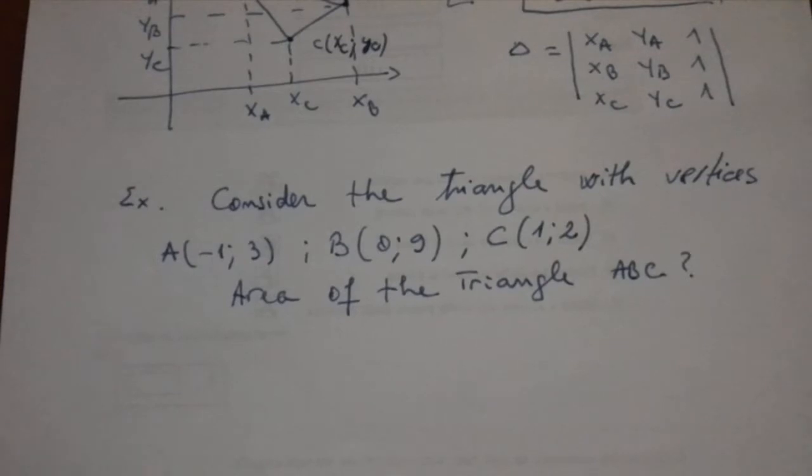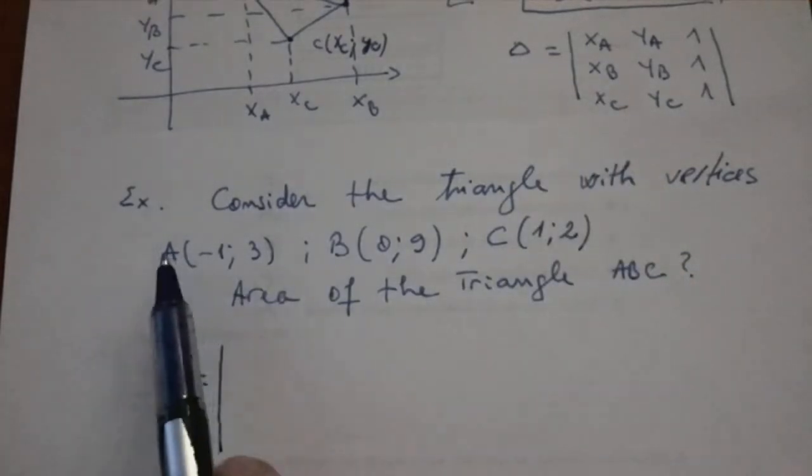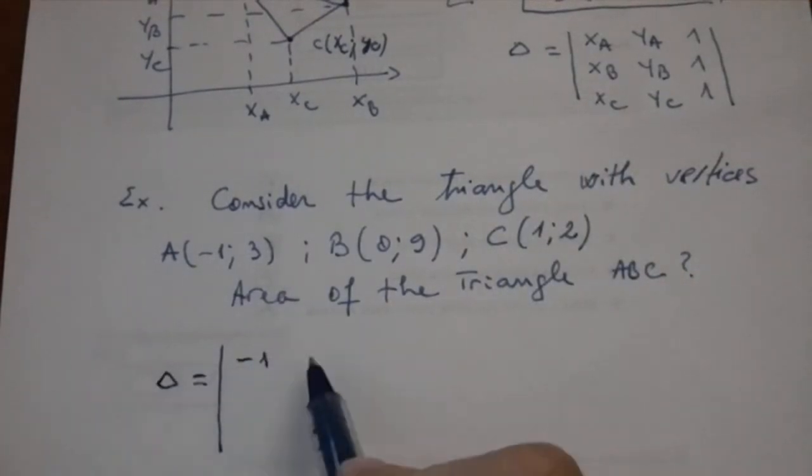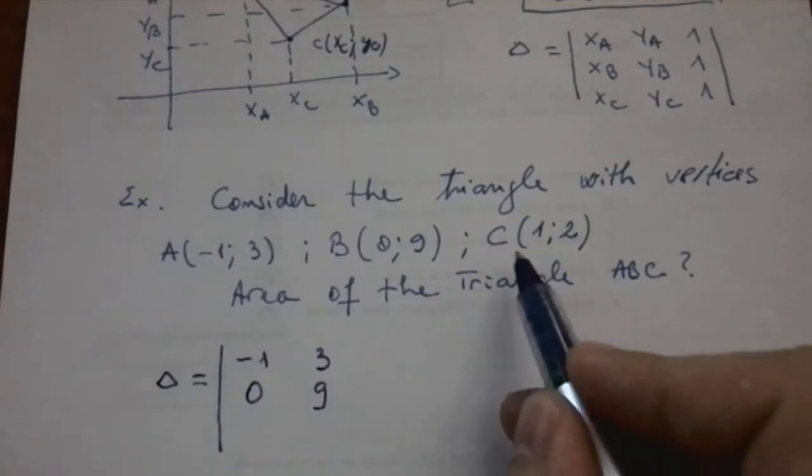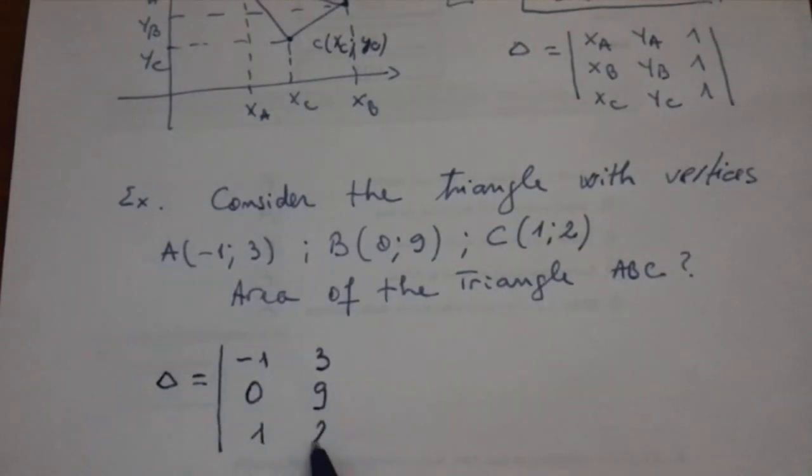So we form the determinant Delta with this data: A, B, C, and the column.